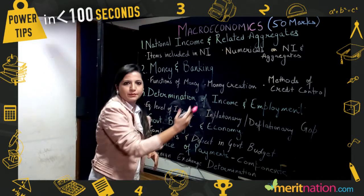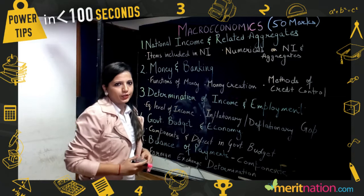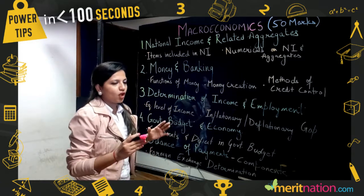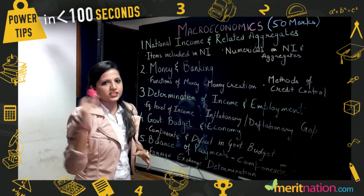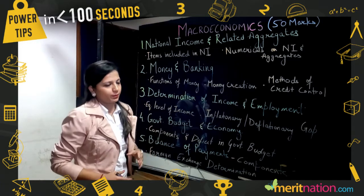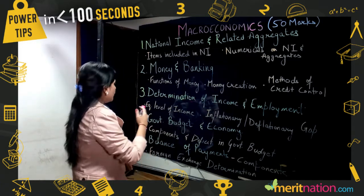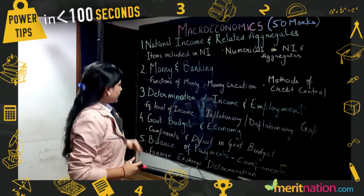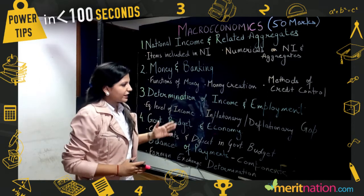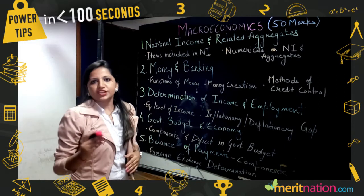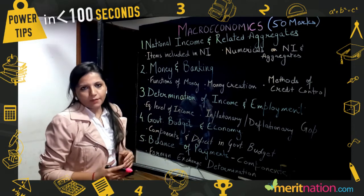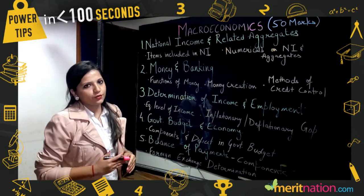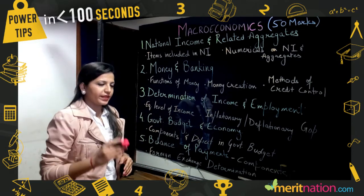Moving to Chapter 2, which is money and banking, the topics that will be on the paper are functions of money, money creation, and methods of credit control. In Chapter 3, equilibrium level of income, inflationary and deflationary gap, and measures to control them are very important.